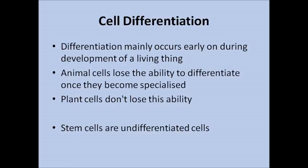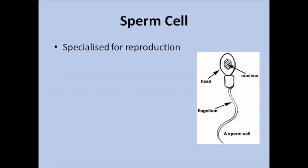Differentiation mainly occurs early on during development of a living thing. For humans it's as we're developing as an embryo in the mother's womb. Most animal cells lose this ability to differentiate once they become specialised to a certain job, whereas plant cells don't lose this ability. However, there are some cells in an adult called stem cells which remain undifferentiated, meaning they can change into all types of cells. Stem cells are mainly used for repair of cells.